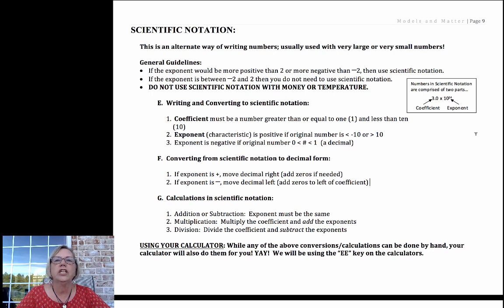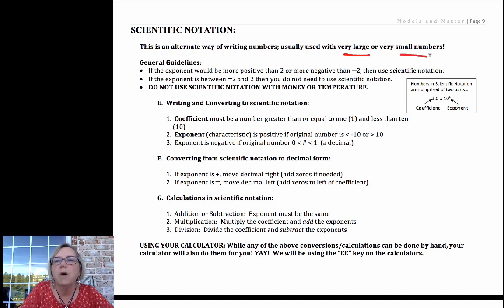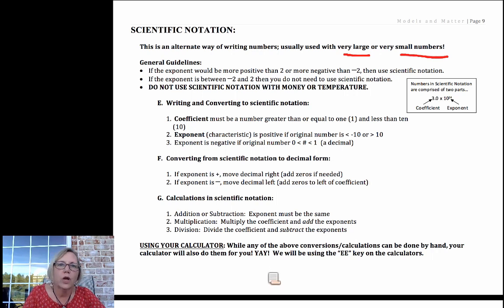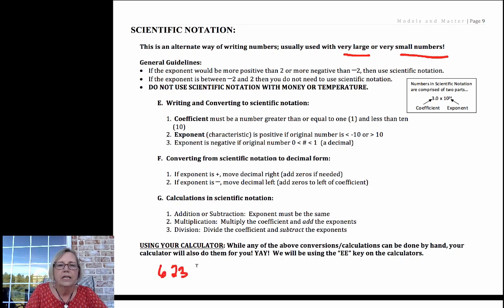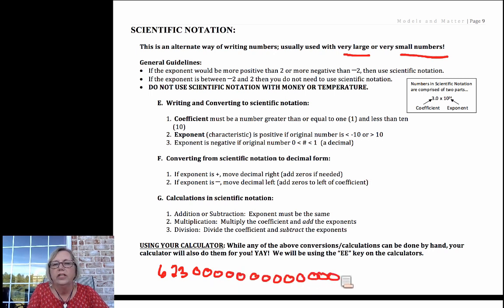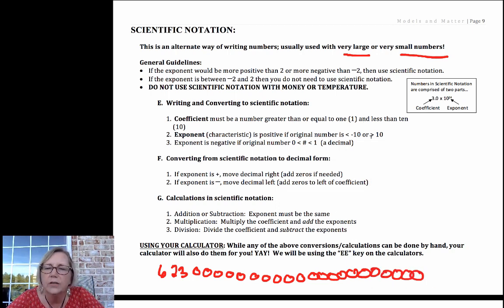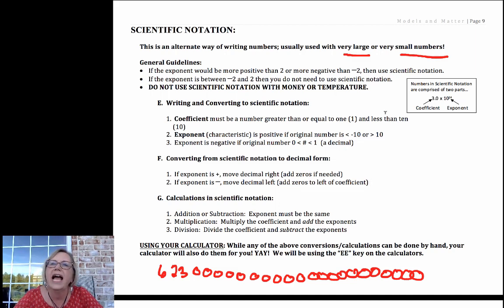In scientific notation, what we want to be doing is finding a way to express very large or very small numbers without having to have a lot of zeros. There's a number called Avogadro's number — it's 6 followed by 21 digits. The point is we don't want to be writing numbers like that.